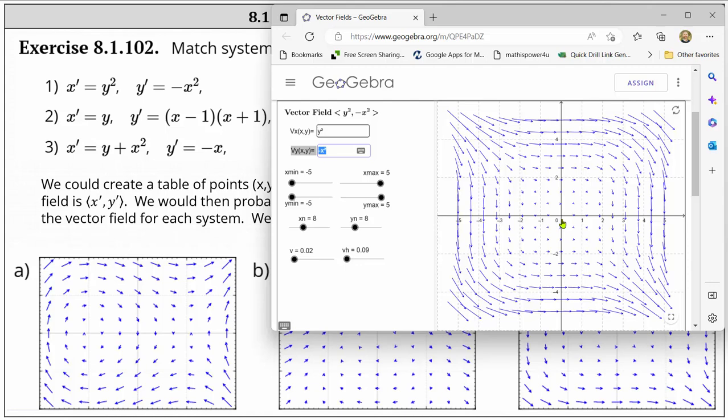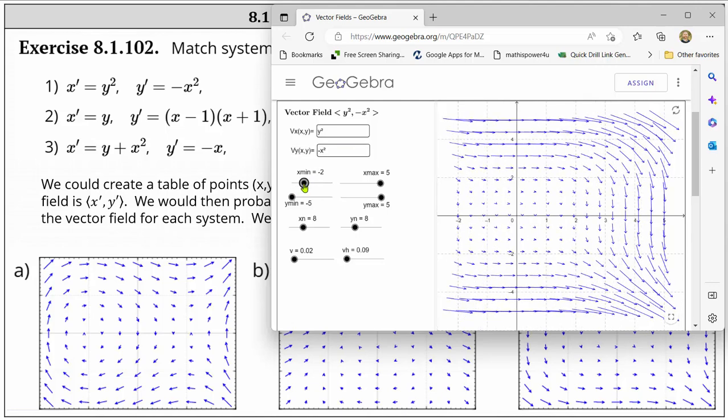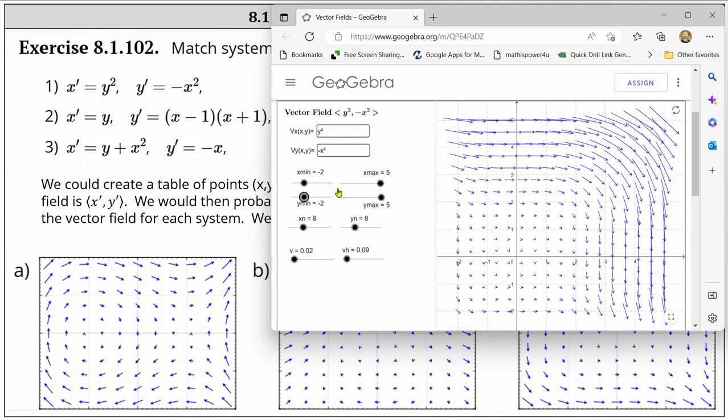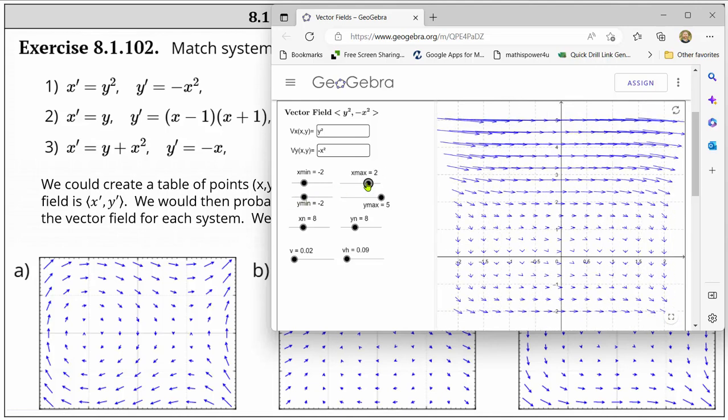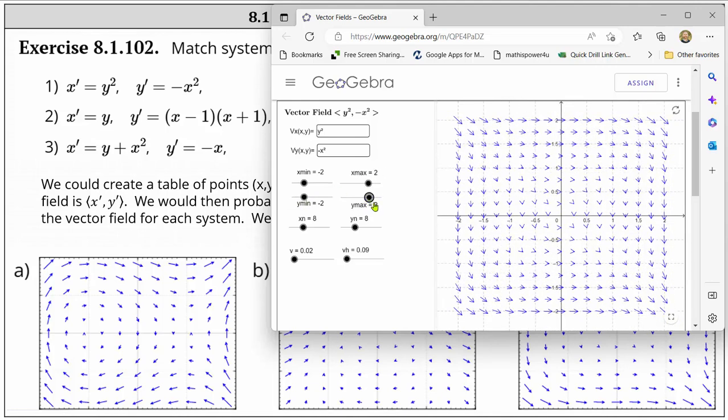This slope field looks pretty good as is, but I can tell by looking at the given slope fields, the x and y mins are negative two, and the x and y maxes are positive two. Let's go ahead and change those values. So we'll change the x min to negative two, as well as the y min. We'll change the x max and y max to positive two. Notice now it doesn't match quite as nicely. Let's go ahead and change the density of the slope field. We'll change both xn and yn to five.